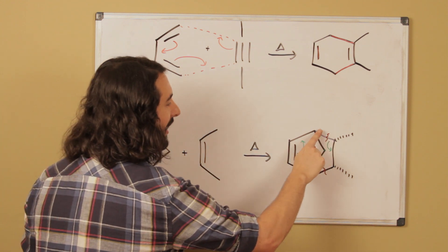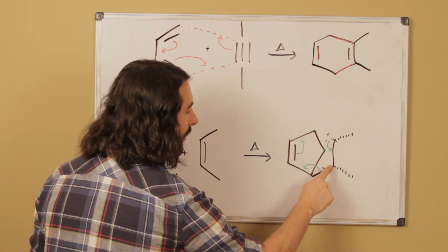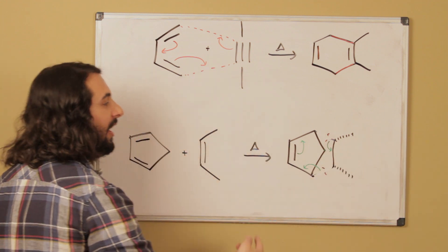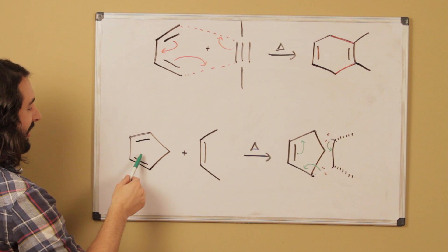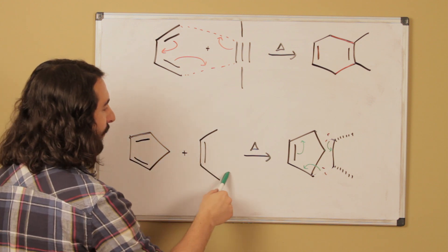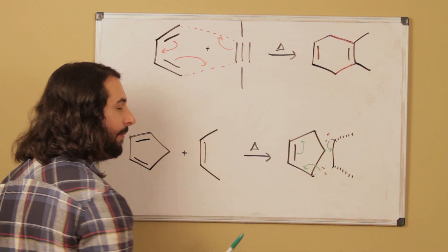So because if we're breaking these bonds right there, boom, boom, and then pulling those fragments apart, after we're done shuffling the pi electrons, we must have pi bonds there and there to create the diene, and then on the dienophile we must have had a pi bond there.